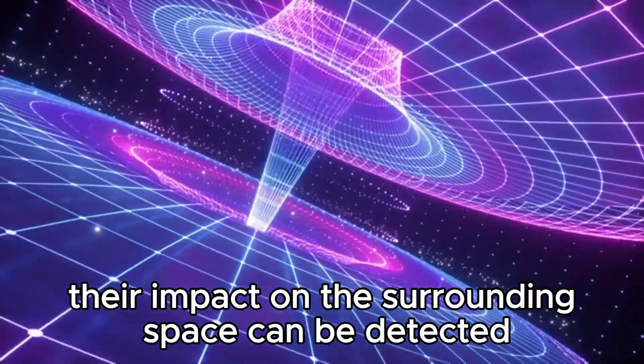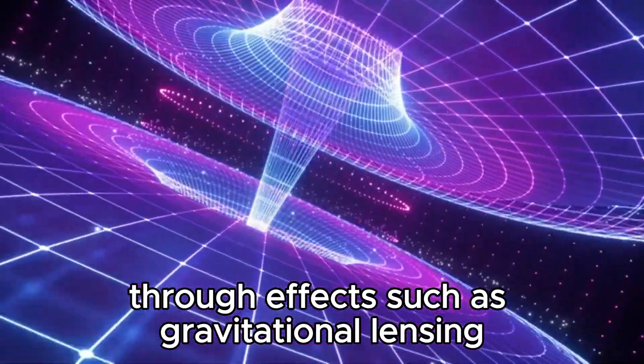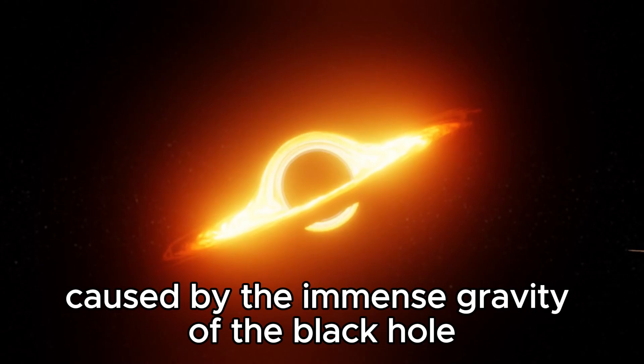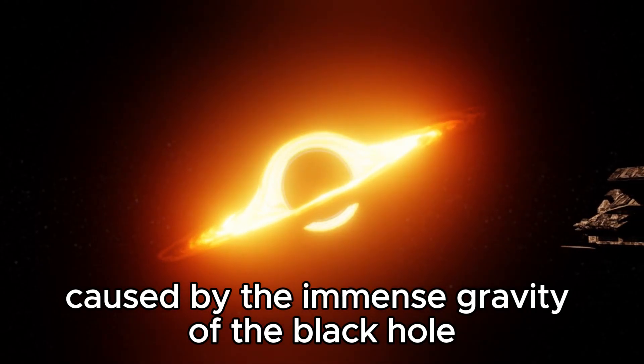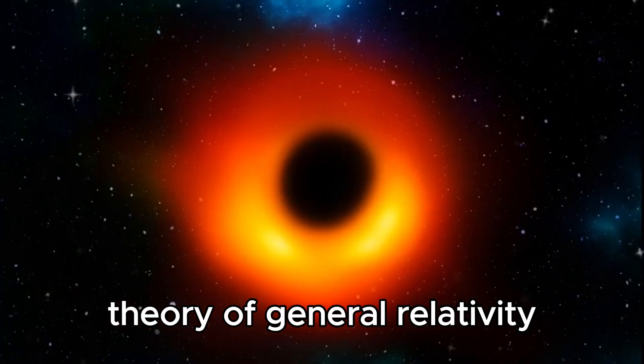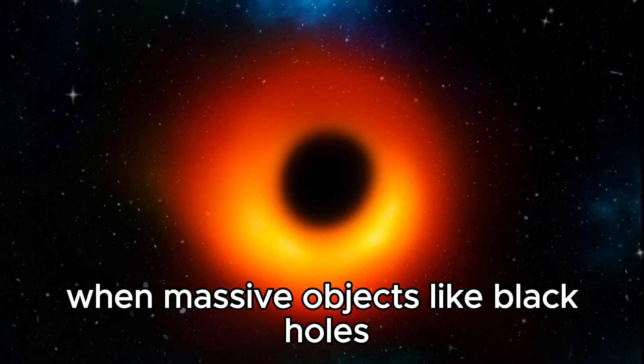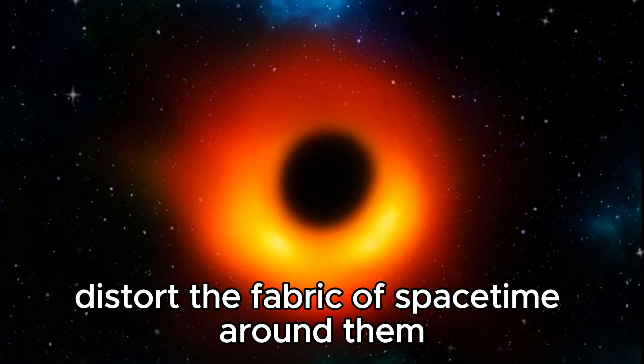Their impact on the surrounding space can be detected through effects such as gravitational lensing, which is a distortion of light caused by the immense gravity of the black hole. Gravitational lensing is a phenomenon predicted by Albert Einstein's theory of general relativity.